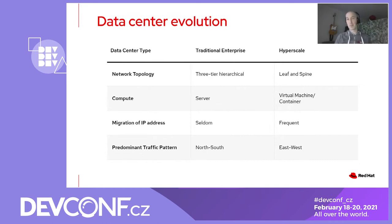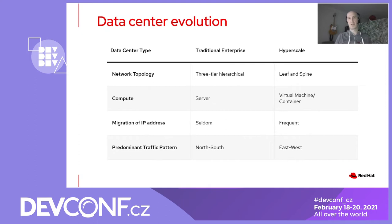The way we build our applications is different. Previously, we would have been building big monolithic applications hosted on a server, and the predominant network traffic pattern would have been north-south — from a client outside the data centre into the data centre. Whereas now our applications are built in a distributed manner, and as a result there's a lot more traffic between services within your application — east-west within the data centre.